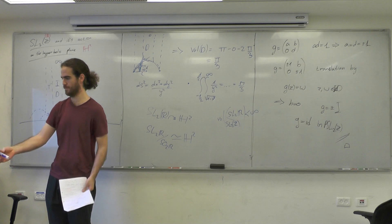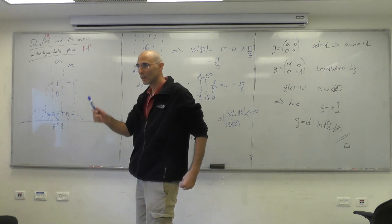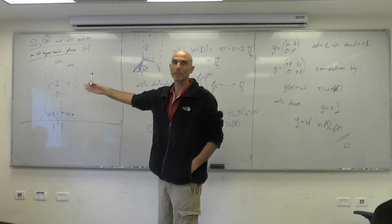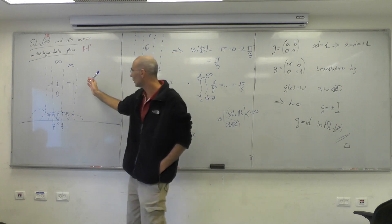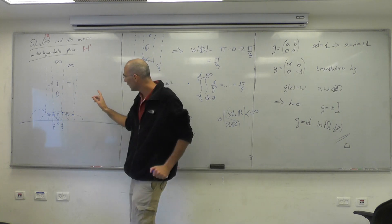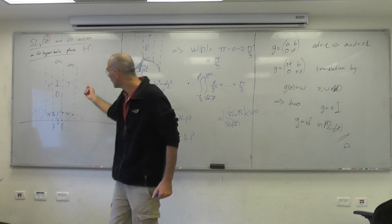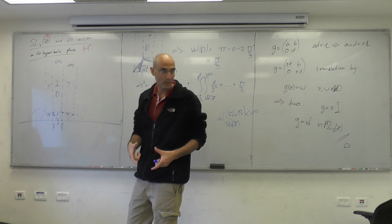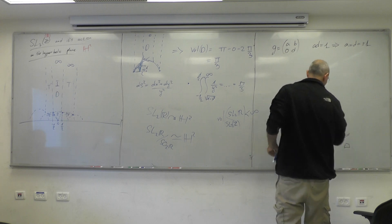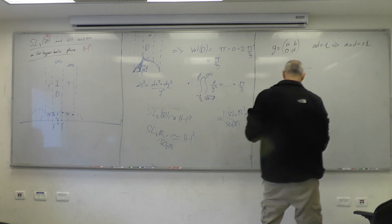Before the break, let me explain how this picture looks in the Poincaré disk model instead of the upper half plane. Let me start with another tessellation called the Farey tessellation.